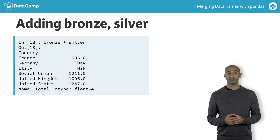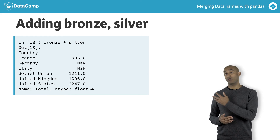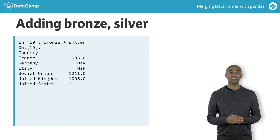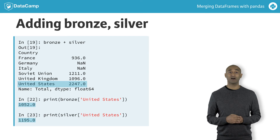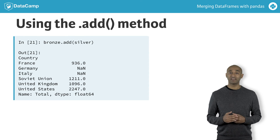Arithmetic operations between Pandas series are carried out for rows with common index values. Since Germany does not appear in silver and Italy does not appear in bronze, those rows have NaN in the sum. On examination, we see the value 2247 for the United States row is the sum of 1052 and 1195 from the corresponding rows of the bronze and silver series respectively.